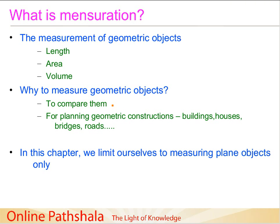The second and most widespread use is for planning geometric constructions. Mensuration is extensively used when making buildings, houses, bridges, and roads. You need to measure the length of a road to be constructed, the area of construction required for a building, and also the concept of volume — for example, when building a water tank. That is why we need to measure geometric objects.